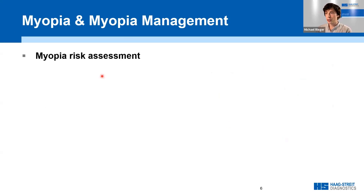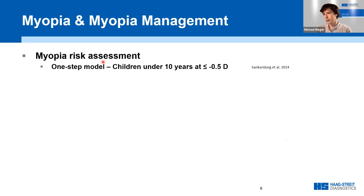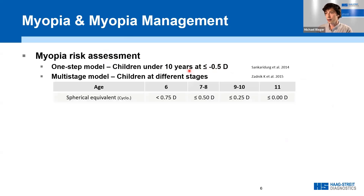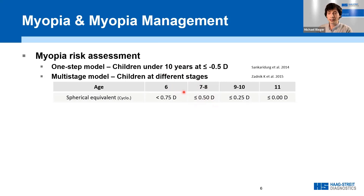To detect the onset of myopia in children, various risk factors must be considered. Until now, one of the best indicators has been the determination of the refractive error or spherical equivalent. In 2014, a single-stage model predicted an increased risk of becoming myopic if children under 10 years are below minus 0.5 diopters. In 2015, a multi-stage model predicted that children less hyperopic than indicated — for example, less than 0.5 diopters between seven and eight years — have a greater than 80% probability of becoming myopic by age 13.